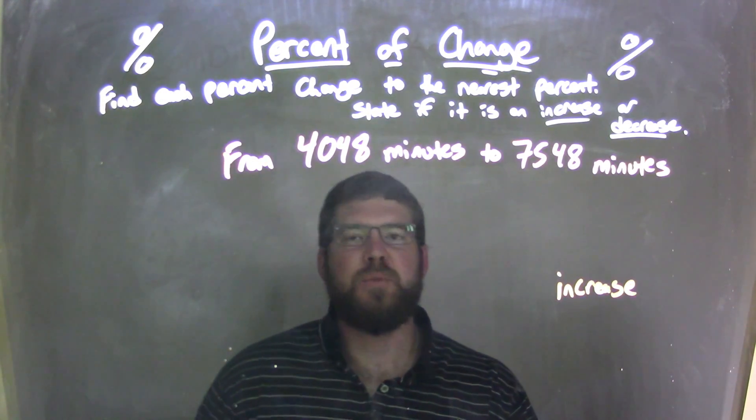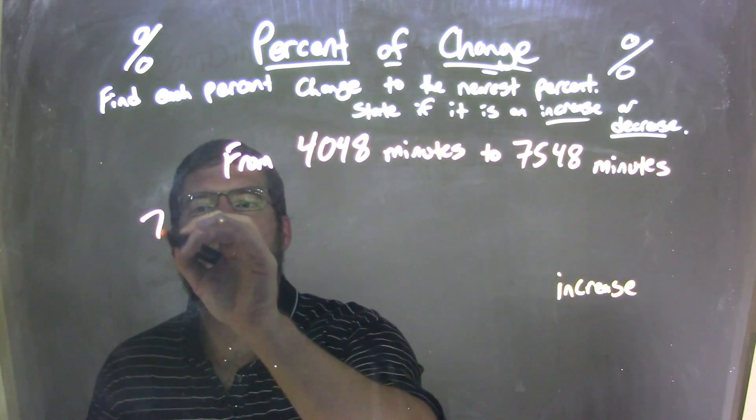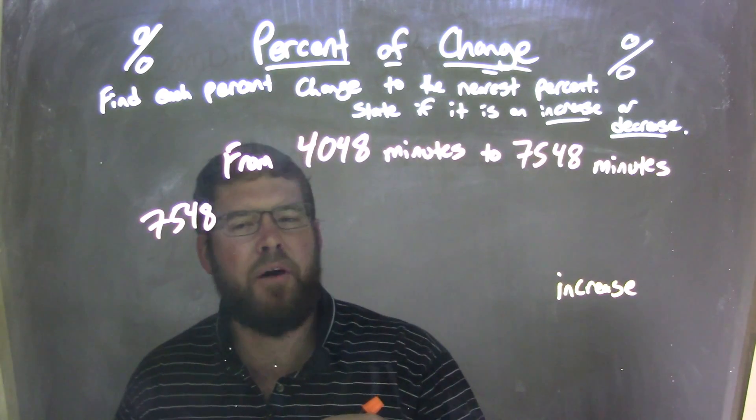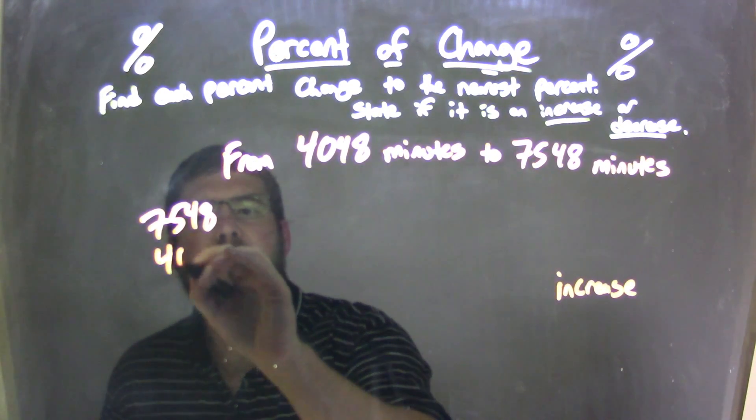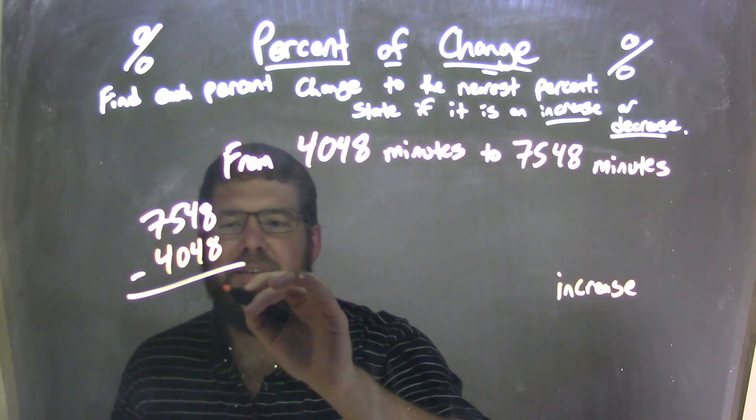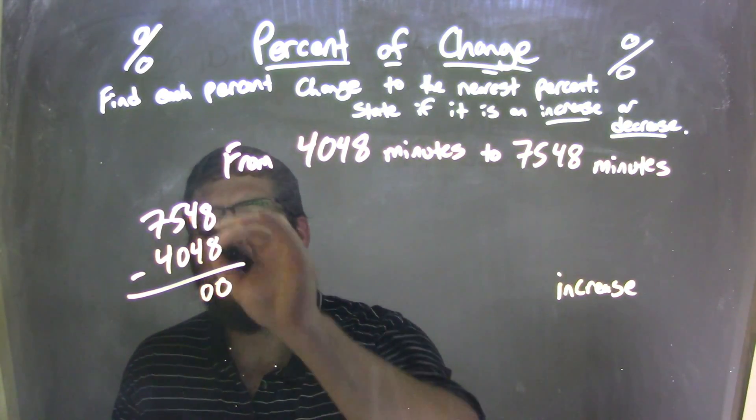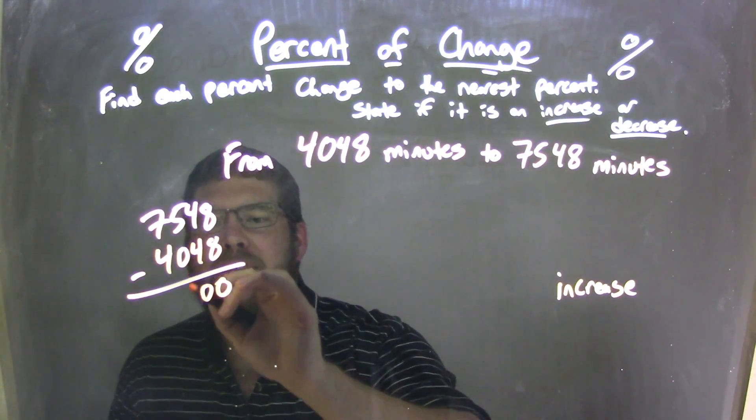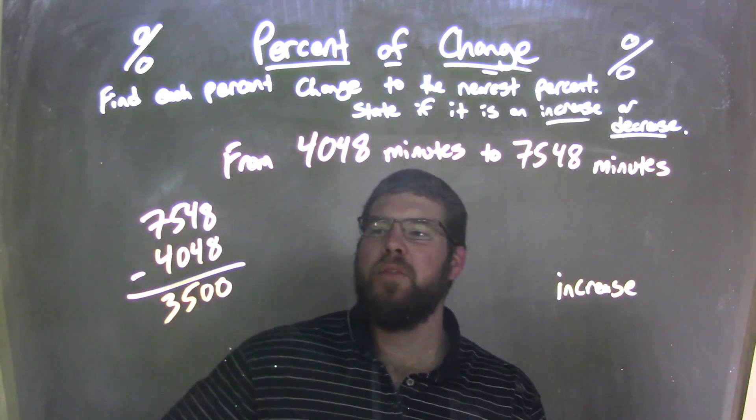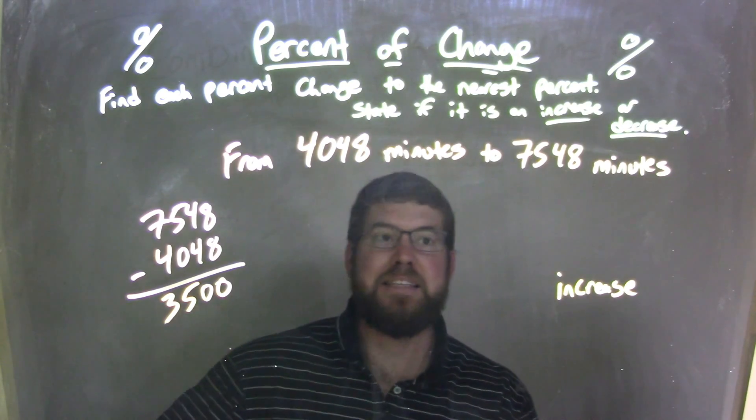So let's go find the difference between these two numbers. I take the larger one, 7,548, the process is still the same even though it's a larger number. Minus 4,048, subtract the two. 8 minus 8, this is easy, 0. 4 minus 4, 0. 5 minus 0 is 5, and 7 minus 4 is 3. So it's a pretty easy 3,500 here of a difference.